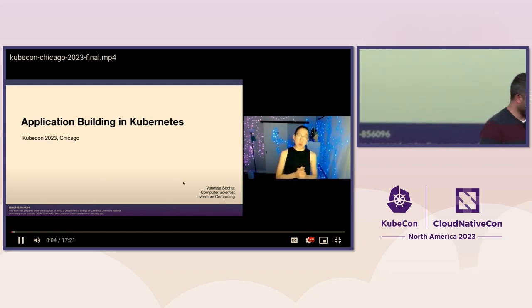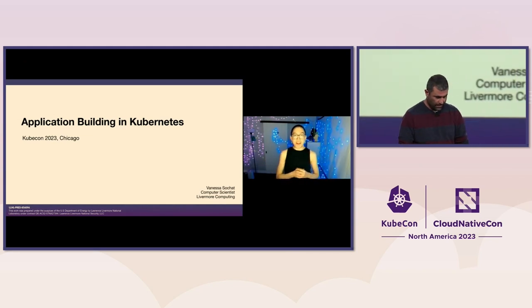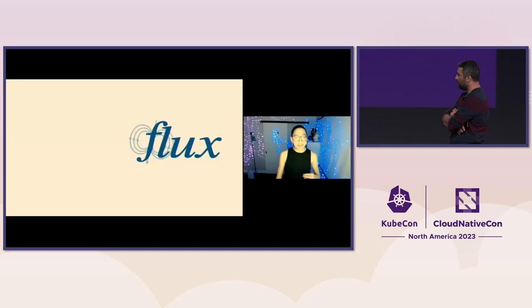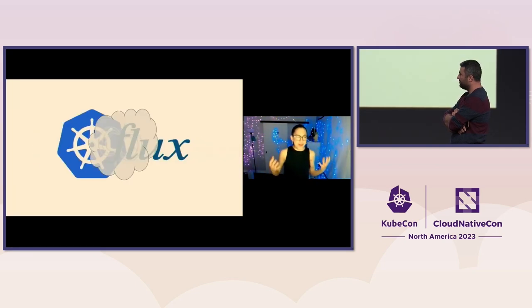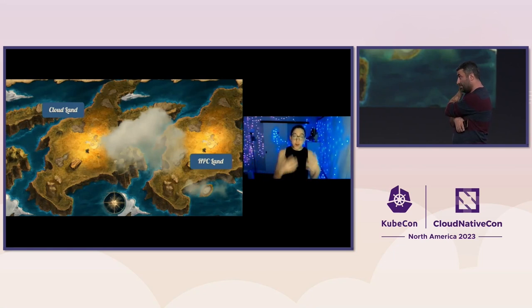I'm going to be talking about application building in Kubernetes using JobSet. About a year ago, I started my adventure as a developer for Kubernetes with one goal: to implement our job manager at the lab — called Flux framework — inside of Kubernetes. I wanted to take Flux and Kubernetes and put them together, because that's how software engineering works. There are these two communities: cloud and HPC. In between them is this beautiful opportunity for the convergence of technologies and culture — we call this converge computing.